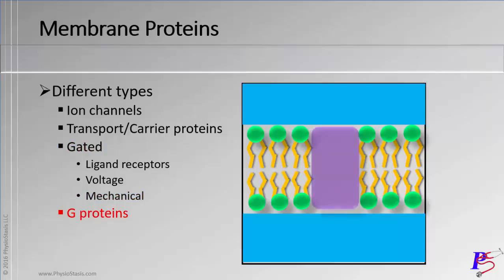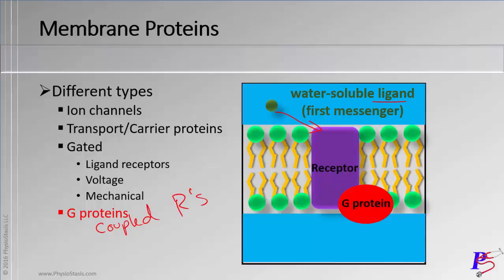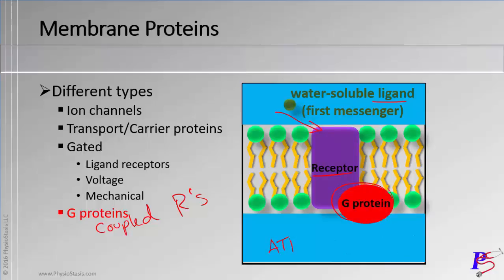The last type of membrane protein we'll discuss here are G proteins. Another ligand comes and binds to the receptor, and this receptor is coupled to a G protein — that's why you might hear these called G protein-coupled receptors. When this ligand binds to the receptor, it activates the G protein and causes changes on the inside. For example, ATP is converted by adenylate cyclase to cyclic AMP, which serves as your second messenger and causes other changes inside the cells.